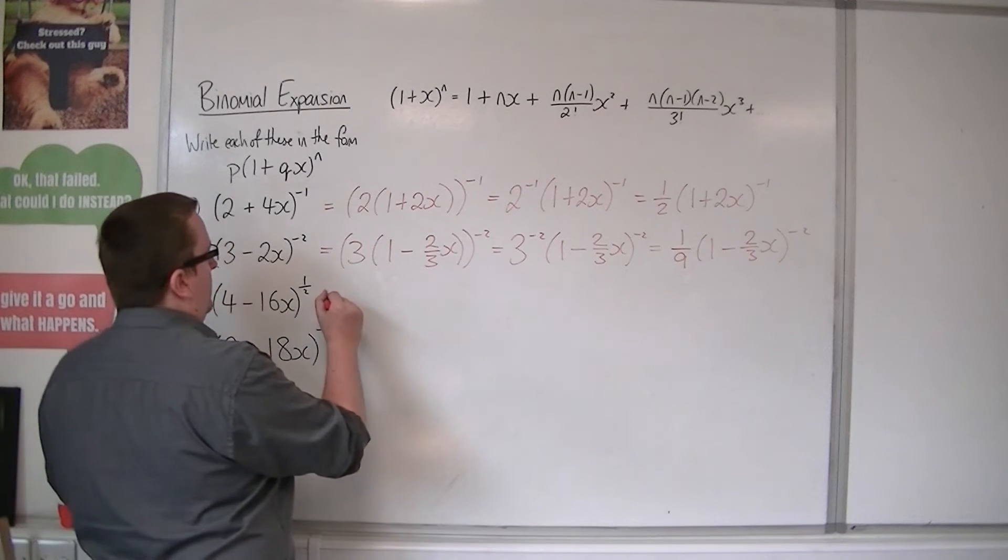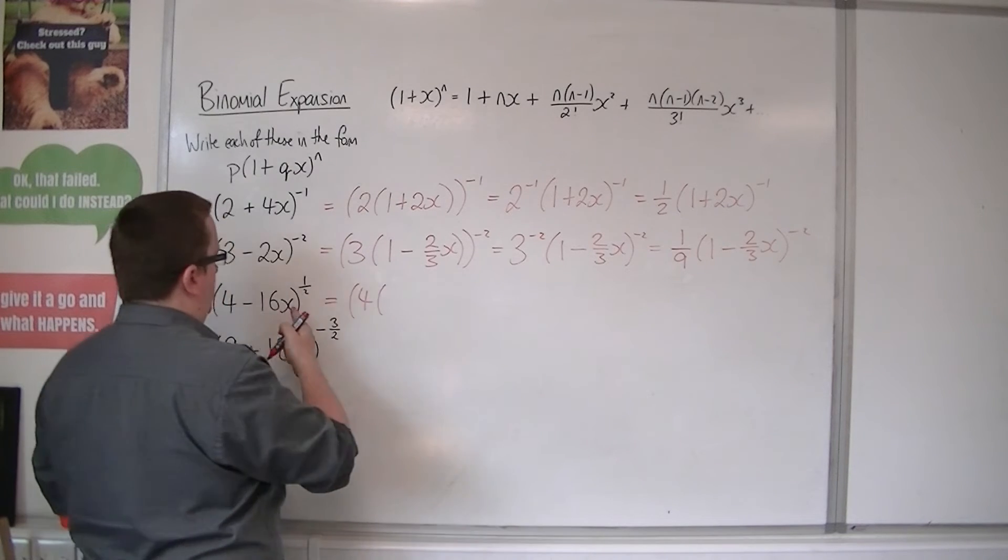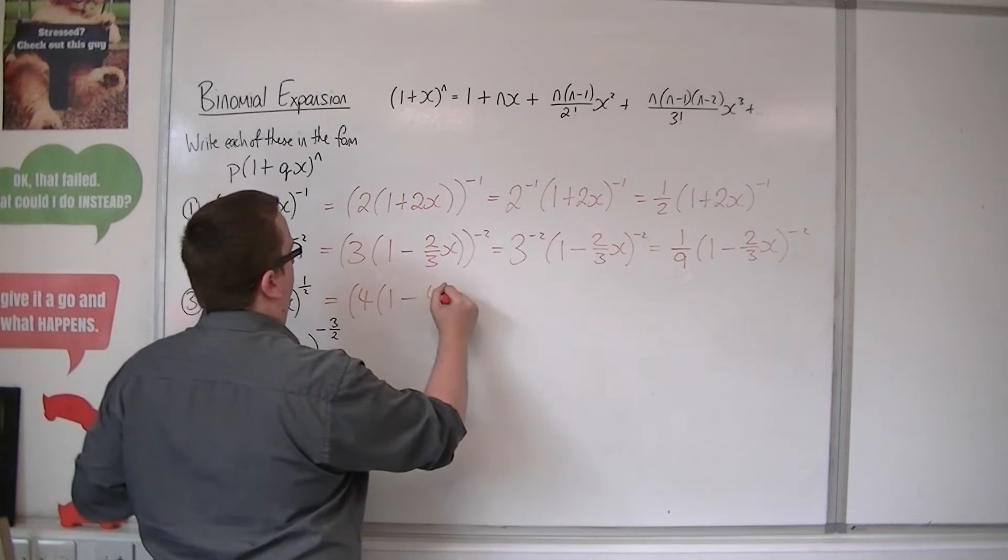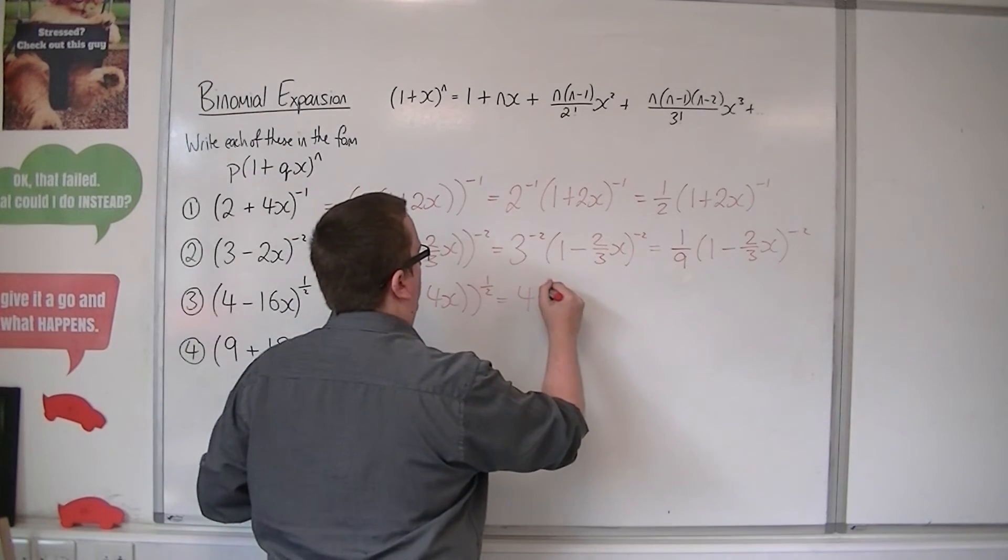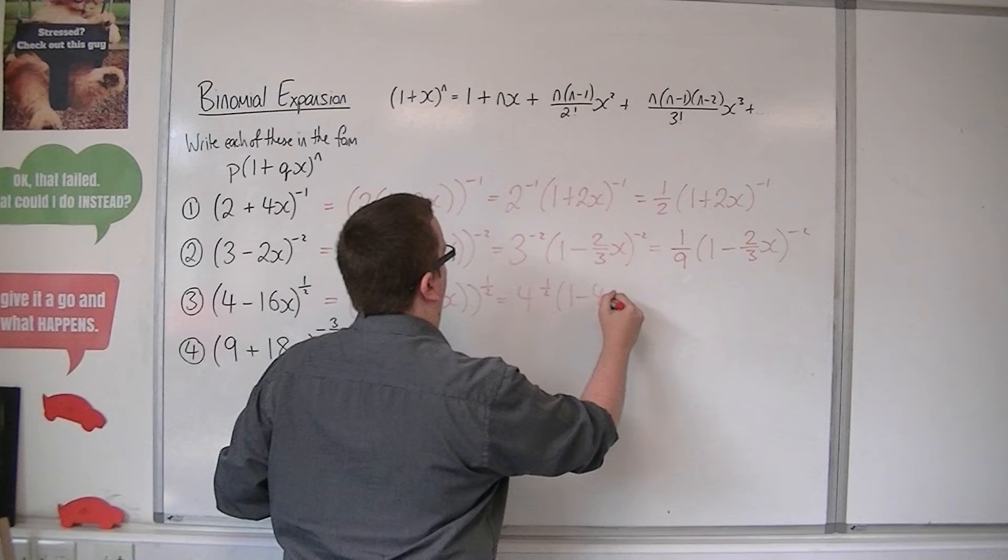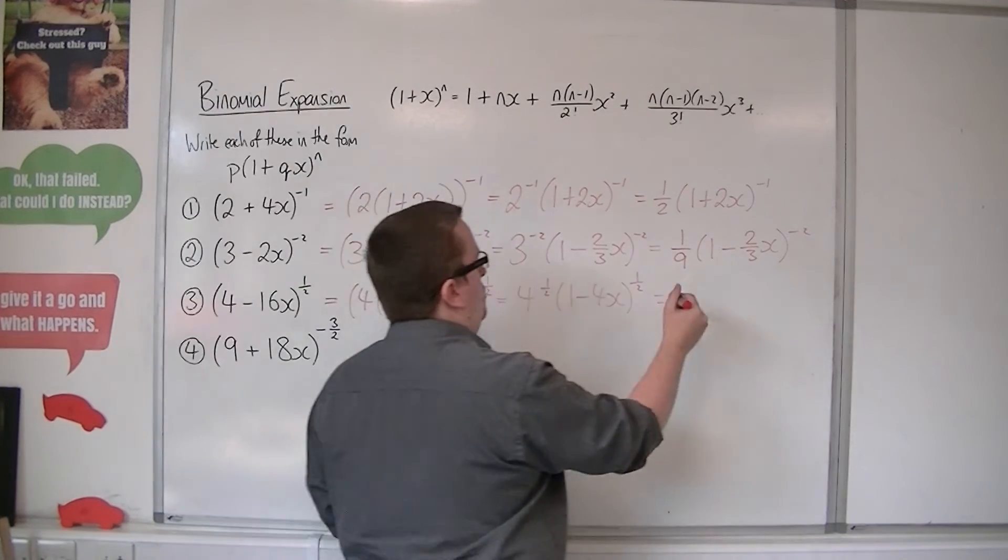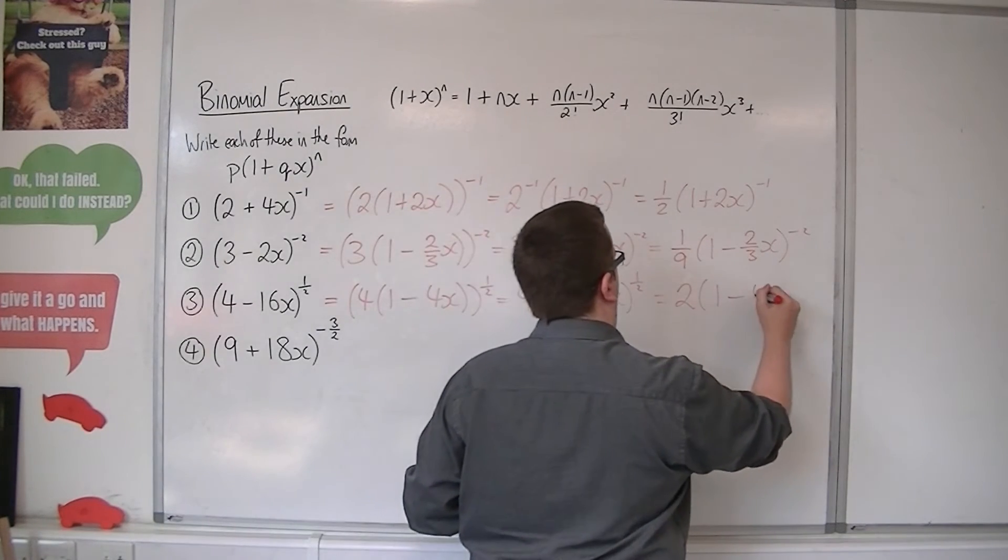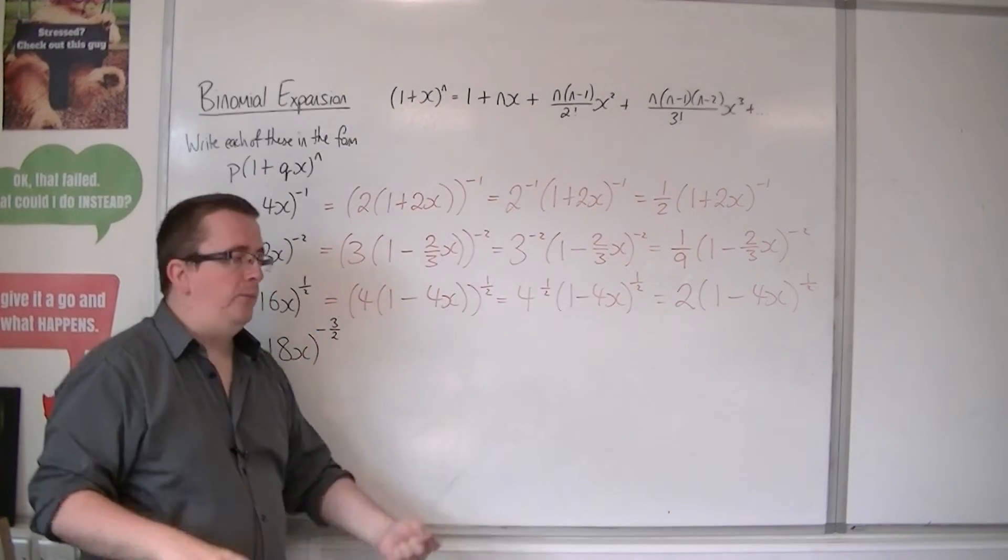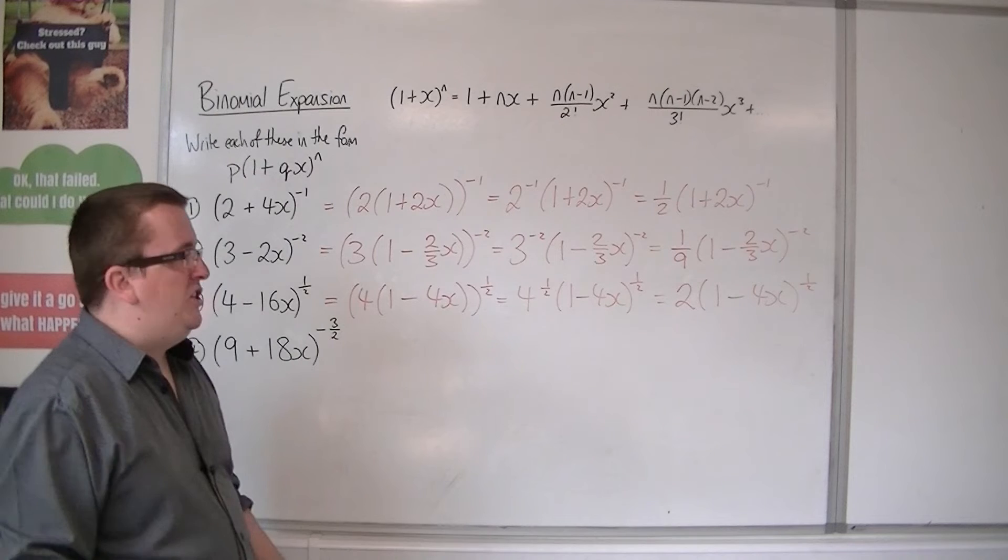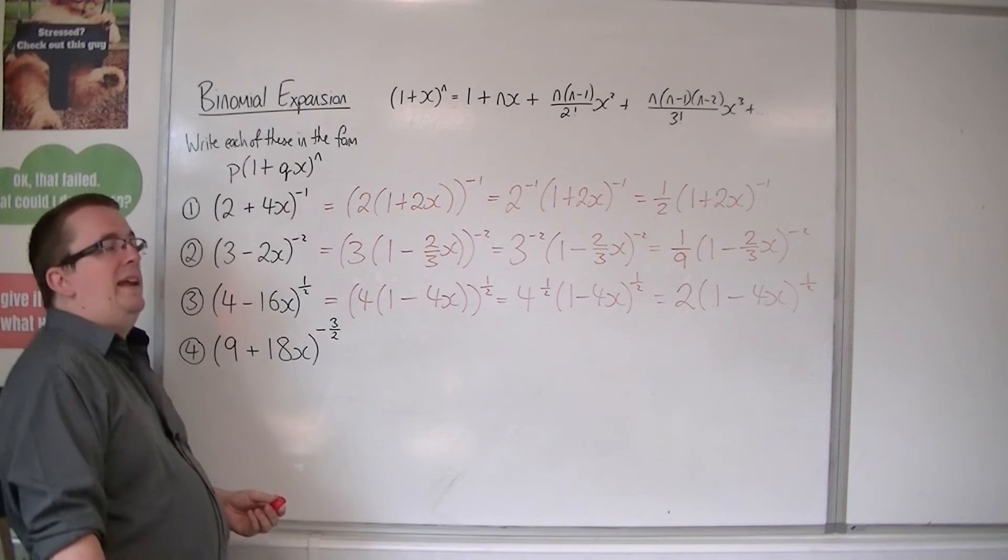Let's try it with number 3. Factor the 4 out of the first two terms, or those two terms. So 1 minus 4x to the half. So we've got 4 to the half times 1 minus 4x to the half. And of course 4 to the half is just 2. So I'd work out what 1 minus 4x to the half is binomially expanded, multiplied all through by 2, and I'm left with the expansion of 4 minus 16x to the half.